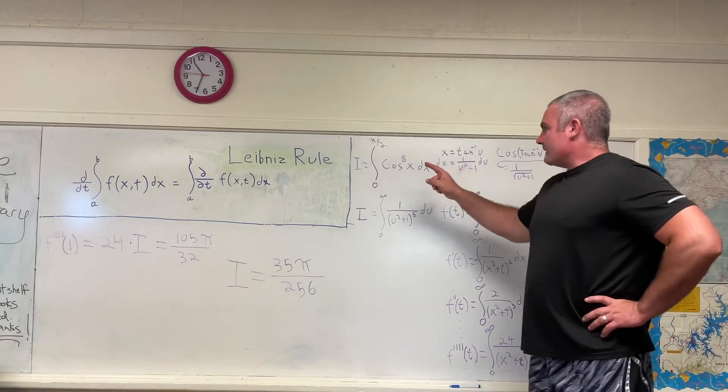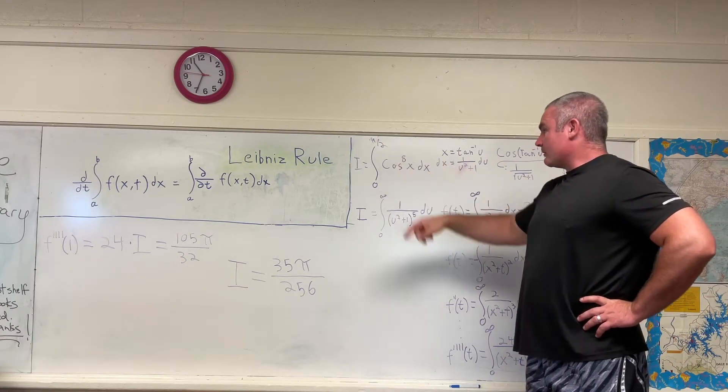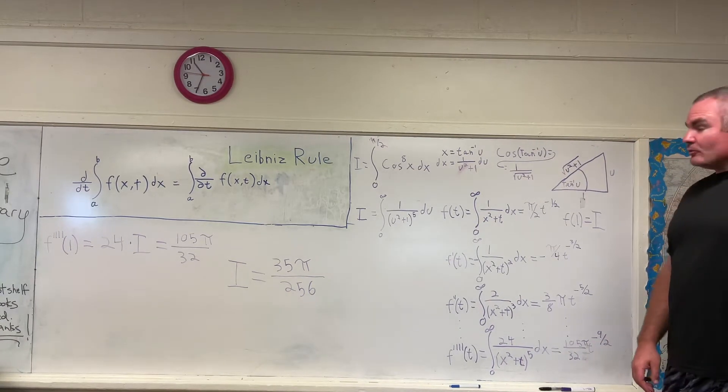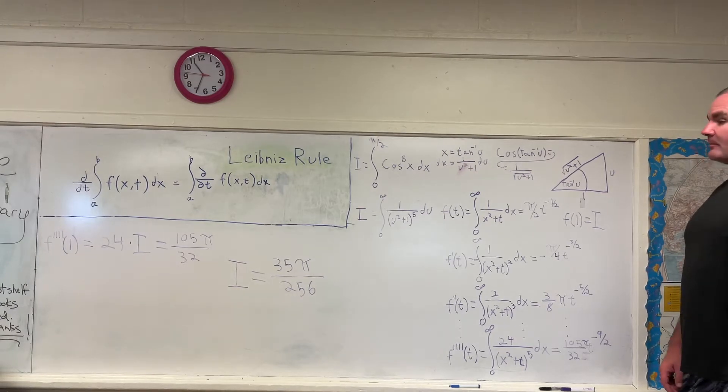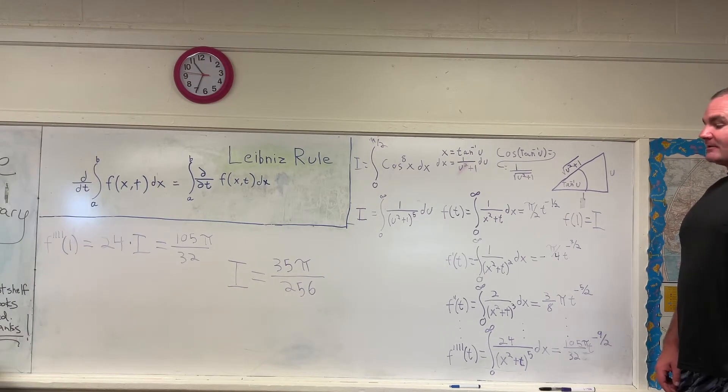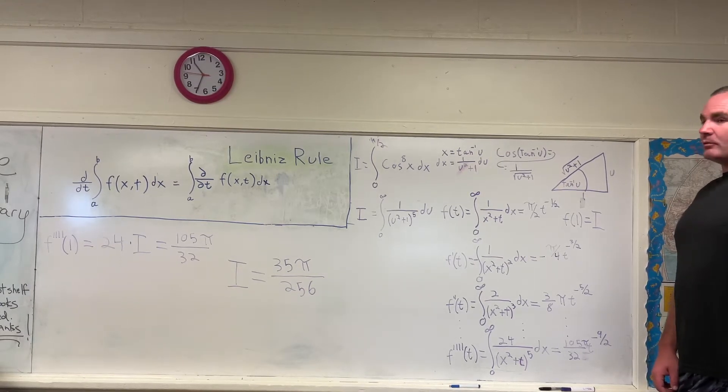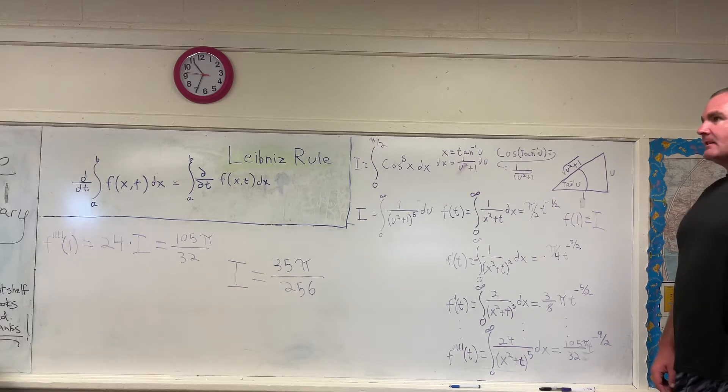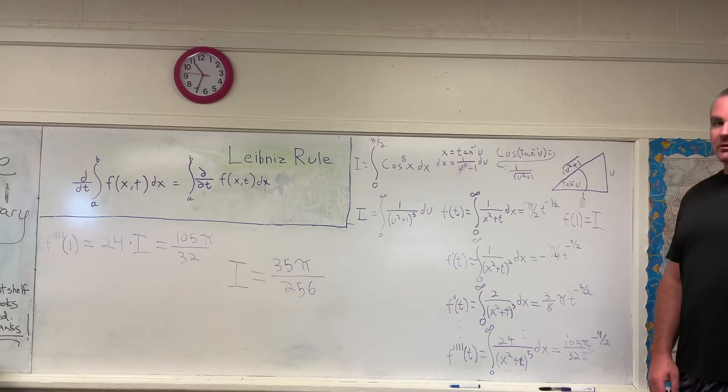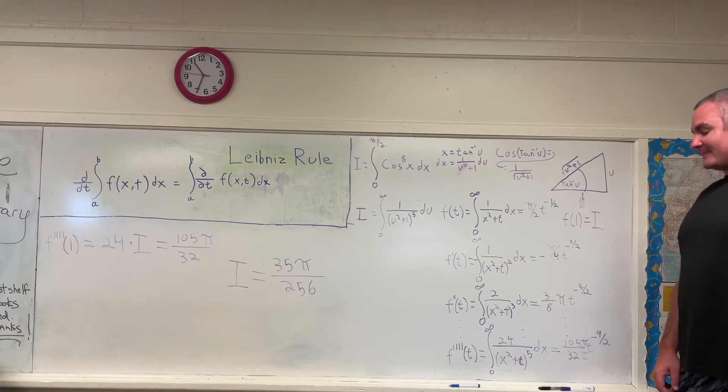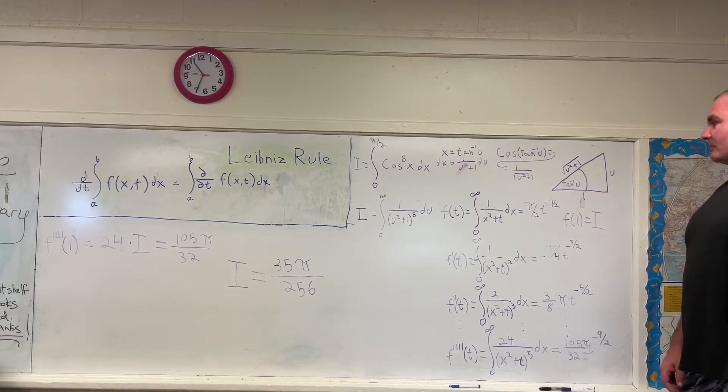We're going to be evaluating an integral that can be solved using traditional methods. The integral is the integral from 0 to pi over 2 of cosine to the eighth x dx. Like I said, you can solve that using traditional methods. The best method would be, well the best method is the method I'm going to show you in my opinion. The second best method would probably be the reduction formula, but this is like a 45 minute to an hour long problem by hand. It's a lot of writing, a lot of room to make mistakes, and in my opinion, the method I'm going to show you that uses the Leibniz rule is a little bit easier.